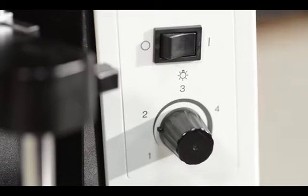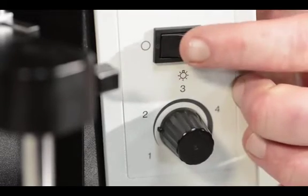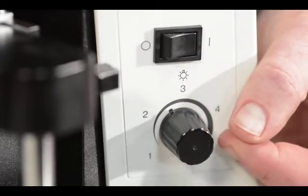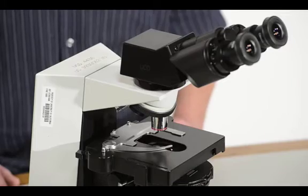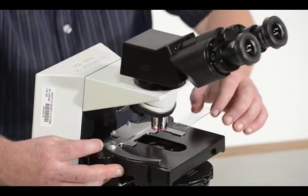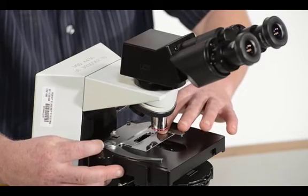Next to the focus knobs, we have a power control switch and a knob that controls light intensity. On top of the stage is the stage clip, which is used to secure the slide. The stage movement is controlled by knobs on the right side.